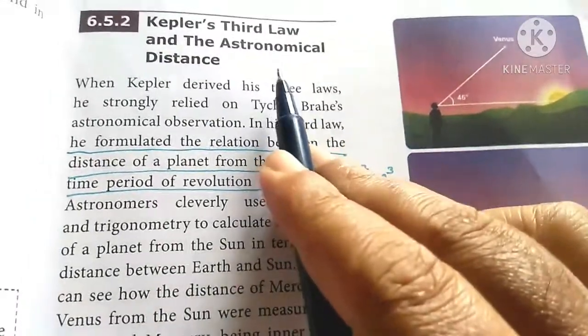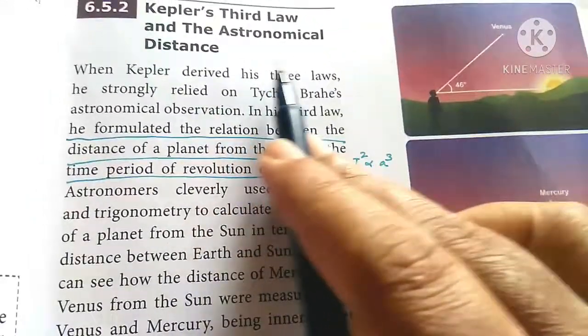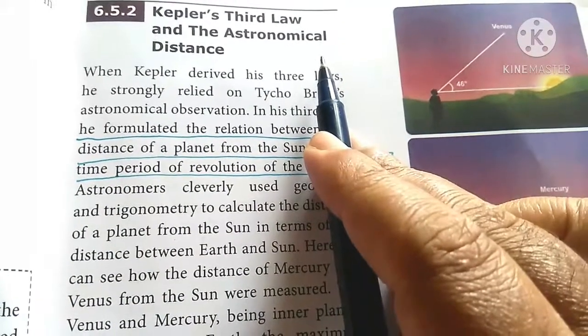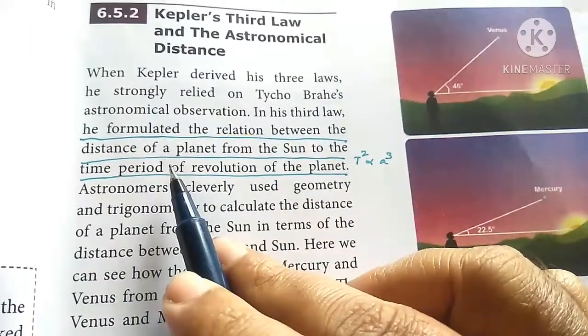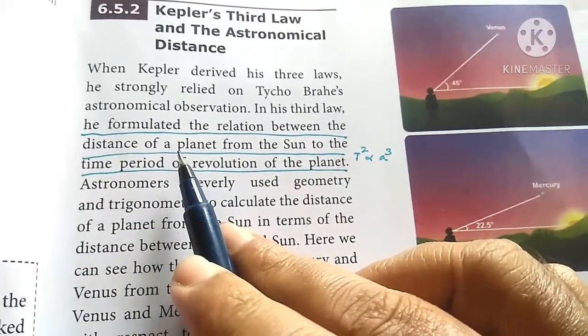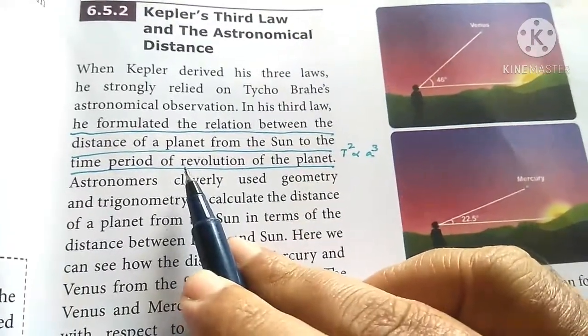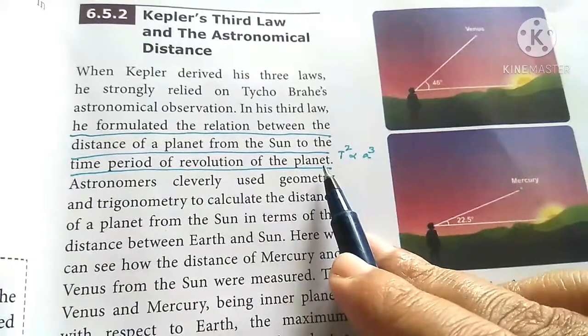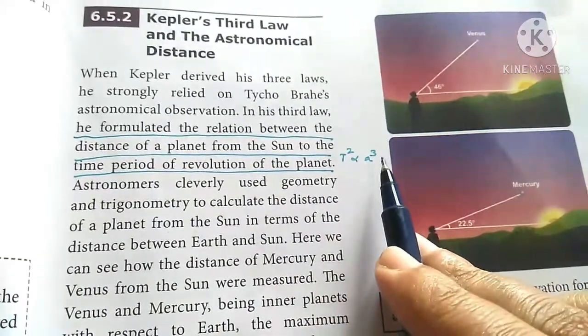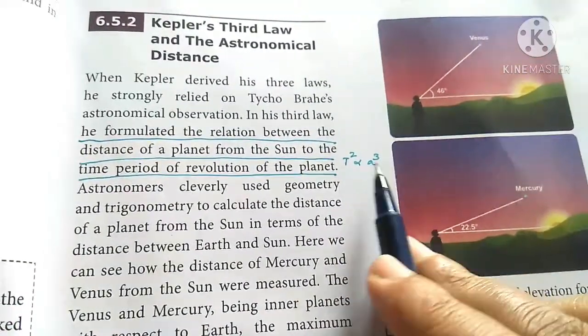This next heading is Kepler's Third Law and Astronomical Distance. Kepler's Third Law relates the distance of the planet from the sun to the time period of revolution of the planet. T squared proportional to a cubed.